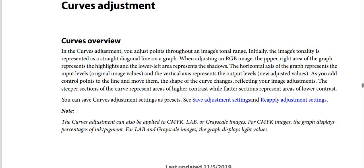Curves Adjustment Overview. In the Curves Adjustment, you adjust points throughout an image's tonal range. Initially, the image's tonality is represented as a straight diagonal line lying on a graph. And when adjusting an RGB image,